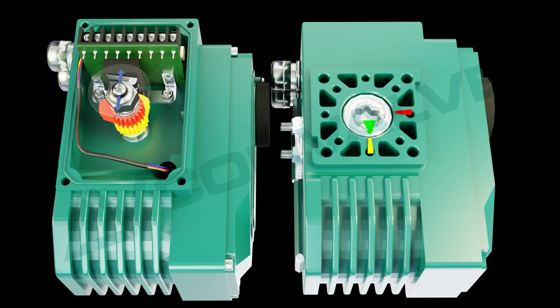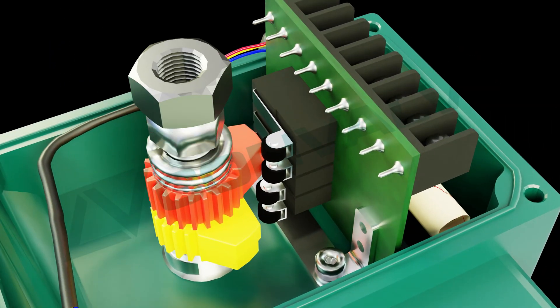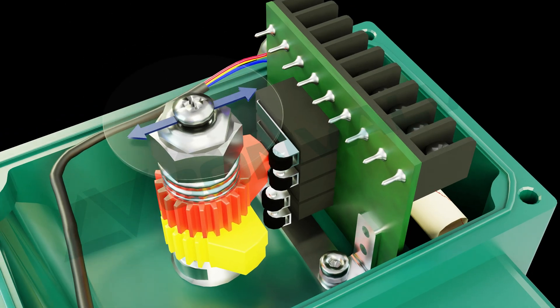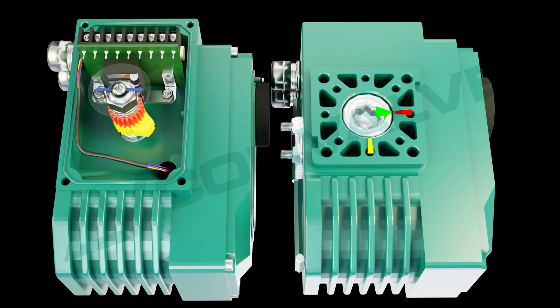Setting the full closed position: manually operate the actuator to the fully closed position. Use a lever to loosen the nuts on the limit cam, rotate the limit cam until the red closed limit switch is activated. Ensure that the actuator's connection to the valve is properly aligned and securely positioned. Once everything is correctly aligned, securely tighten the cam nut.